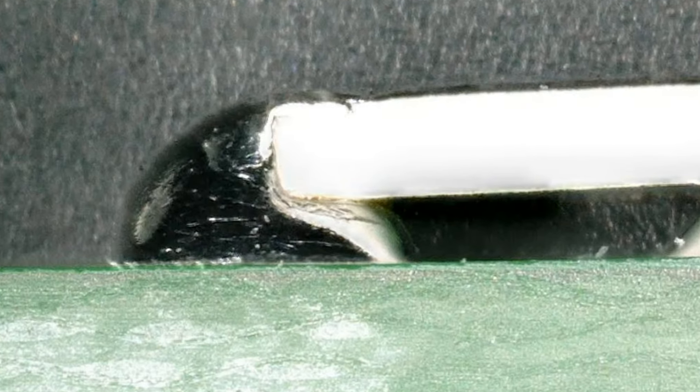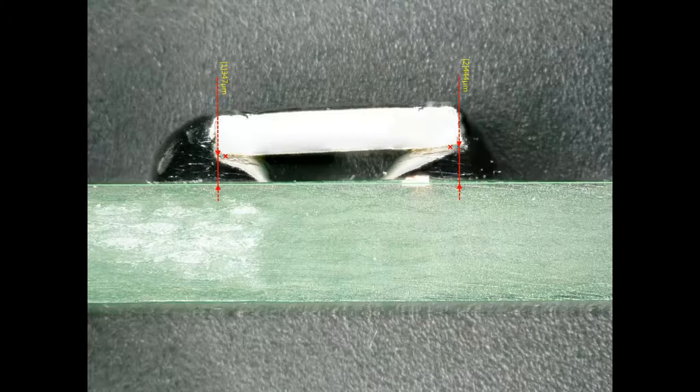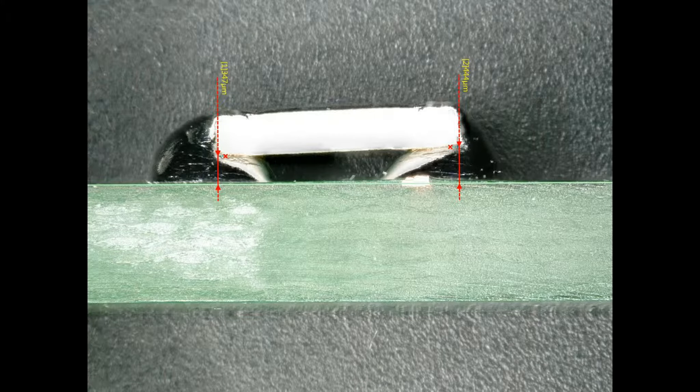A thick G is desirable. In the absence of stress relief bends, the solder will provide the stress relief.